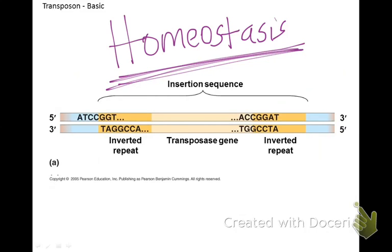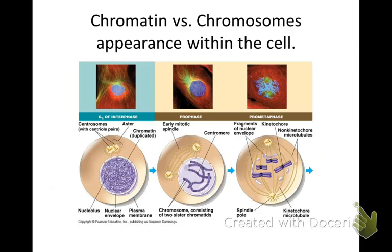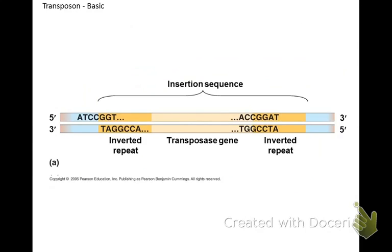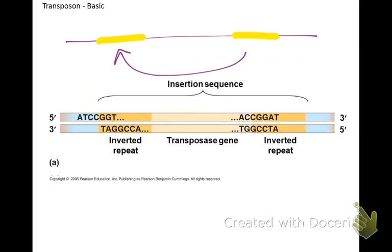Next, something found in both prokaryotes and eukaryotes: transposons — jumping genes. Barbara McClintock discovered these in the 1940s. Your DNA will actually come unattached and reattach somewhere else. So a section of DNA moves from one location and reattaches at a different location — you're no longer making the same protein.